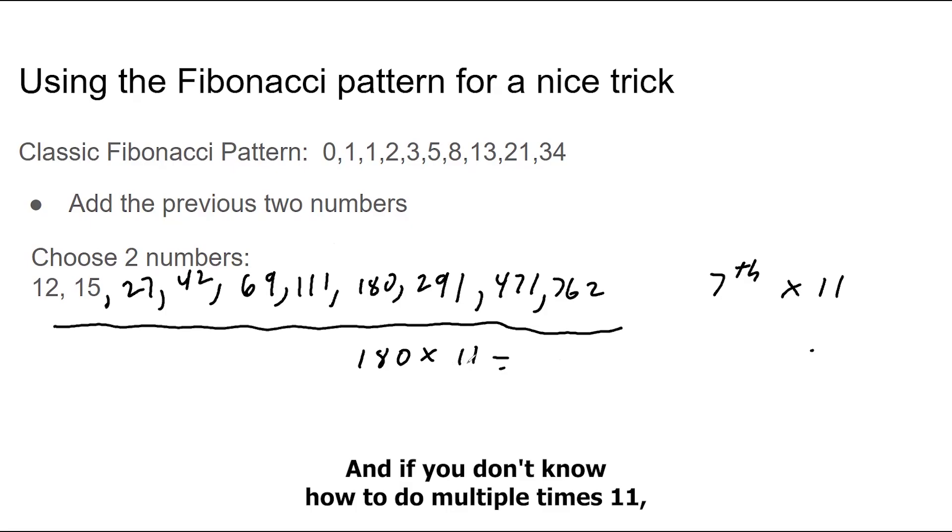And if you don't know how to multiply by 11, I just carry down the zero. Add these two up, that gives you eight. These two up, that gives you nine. And then bring down the one. And that's your answer.